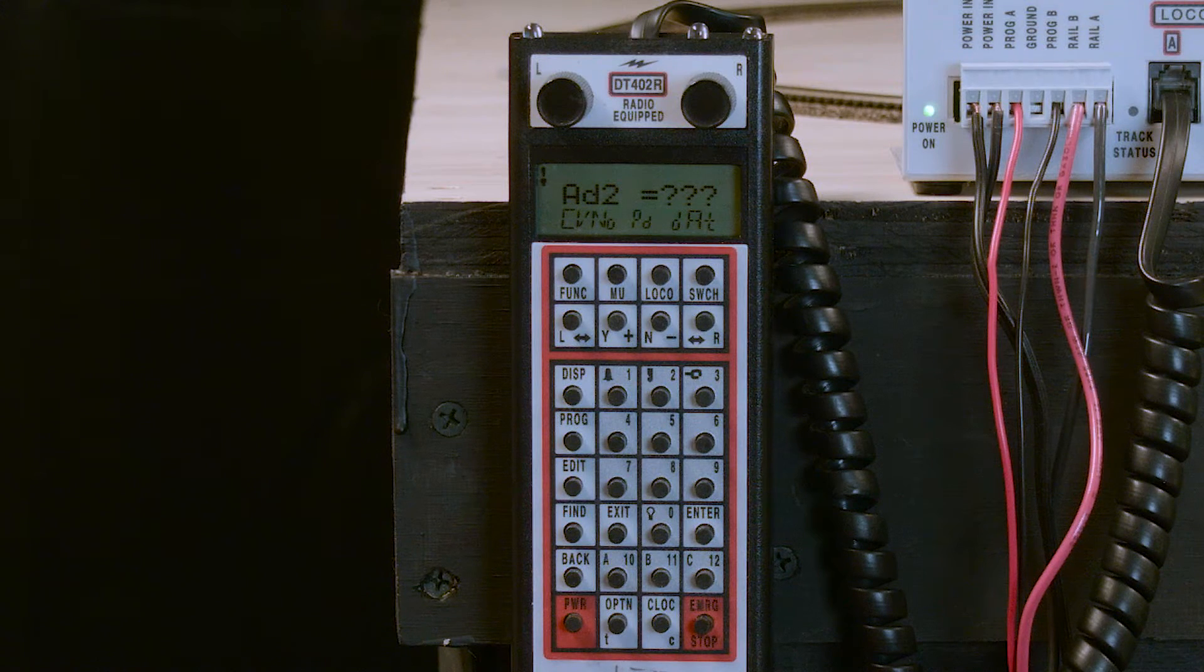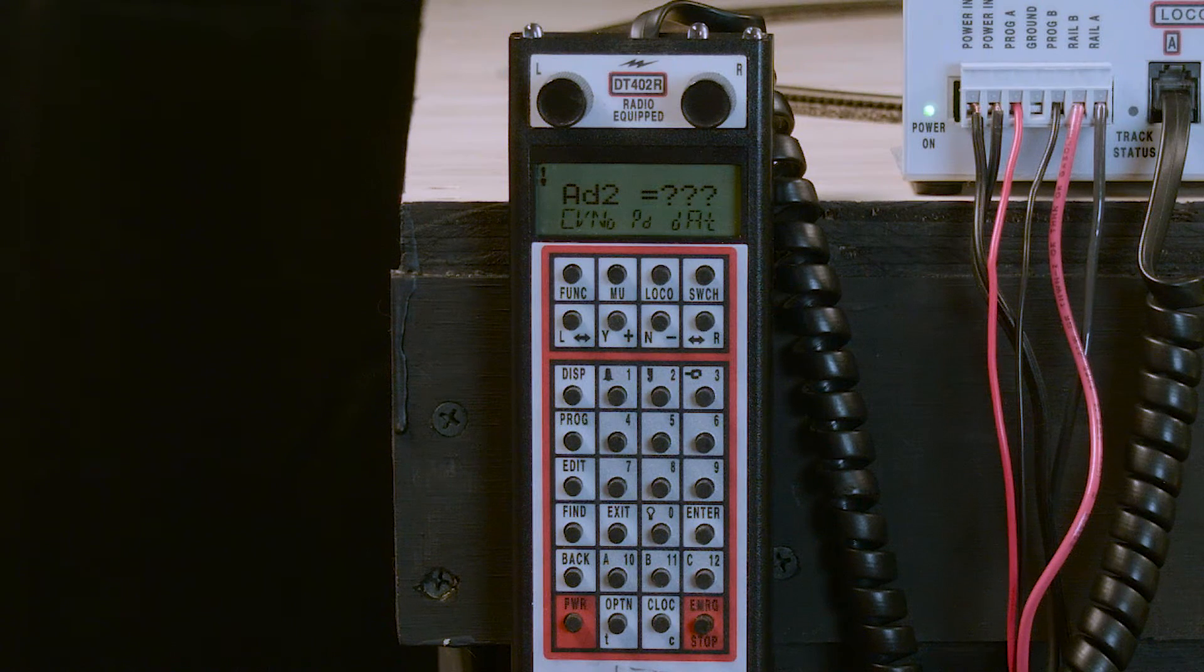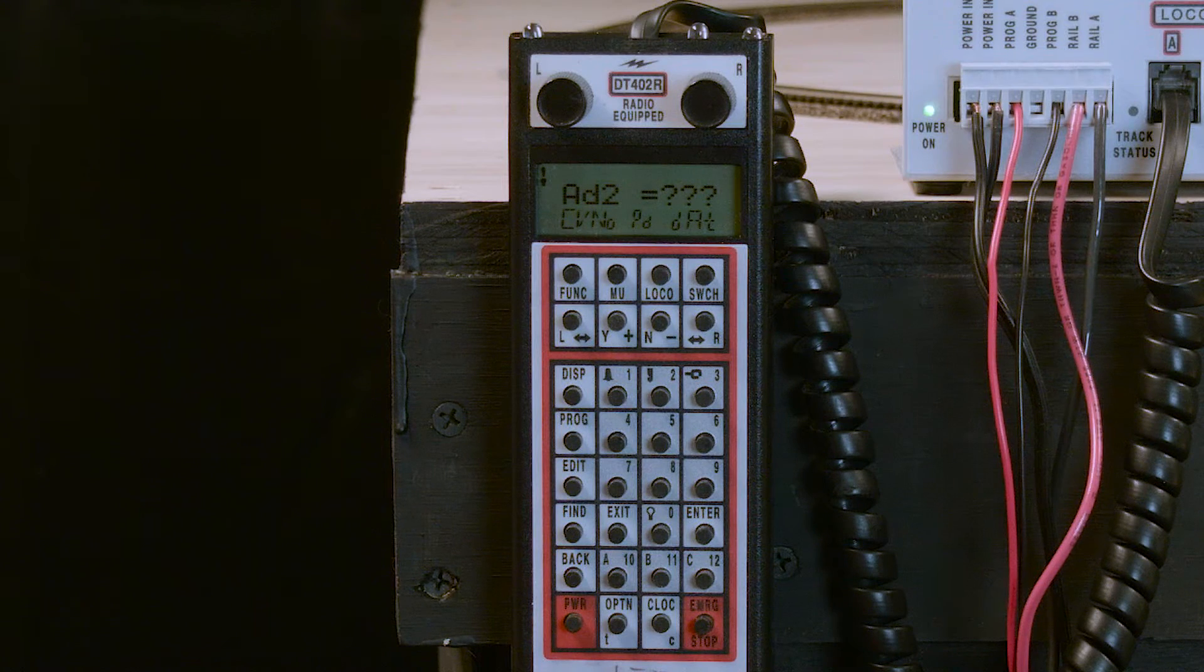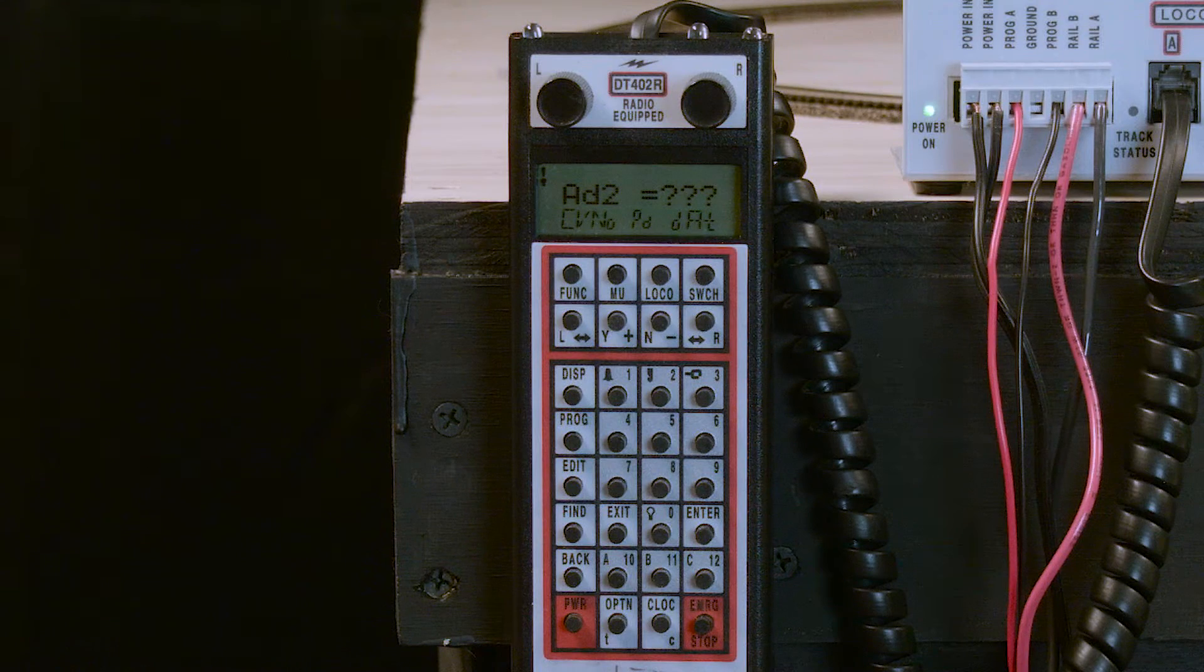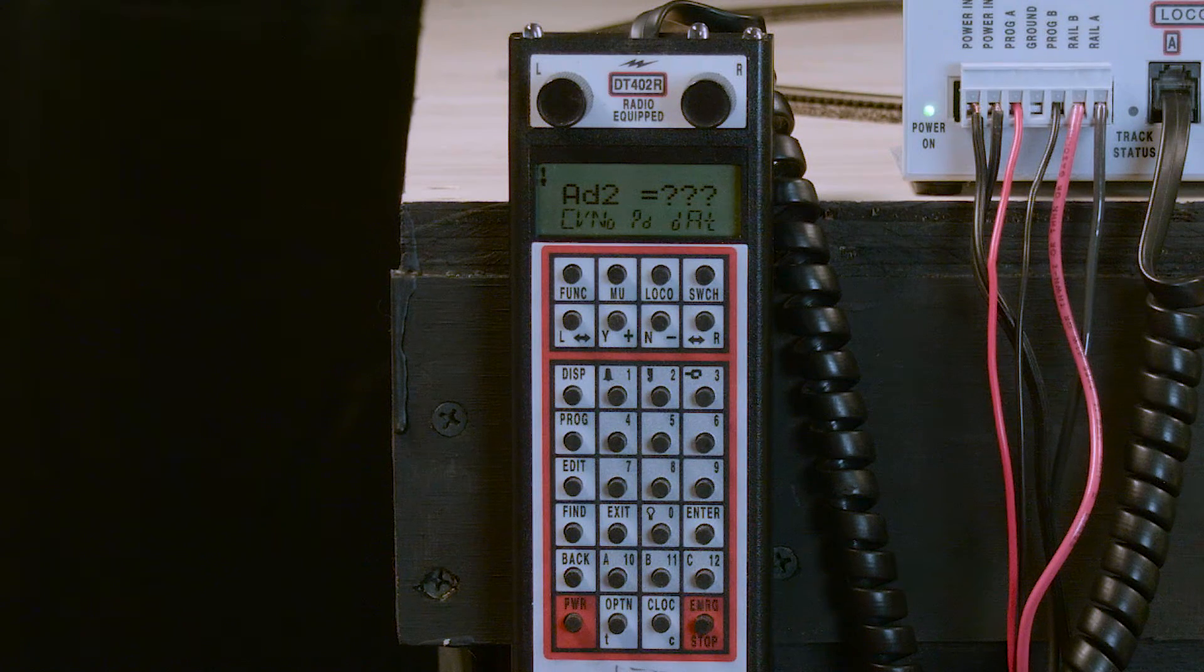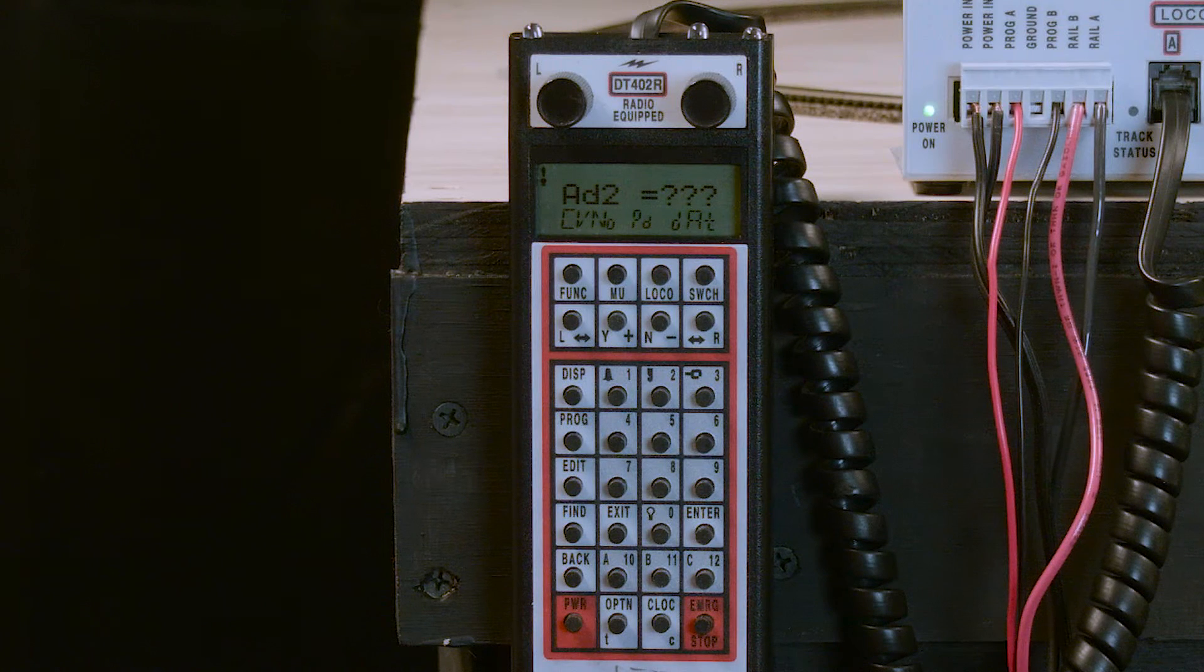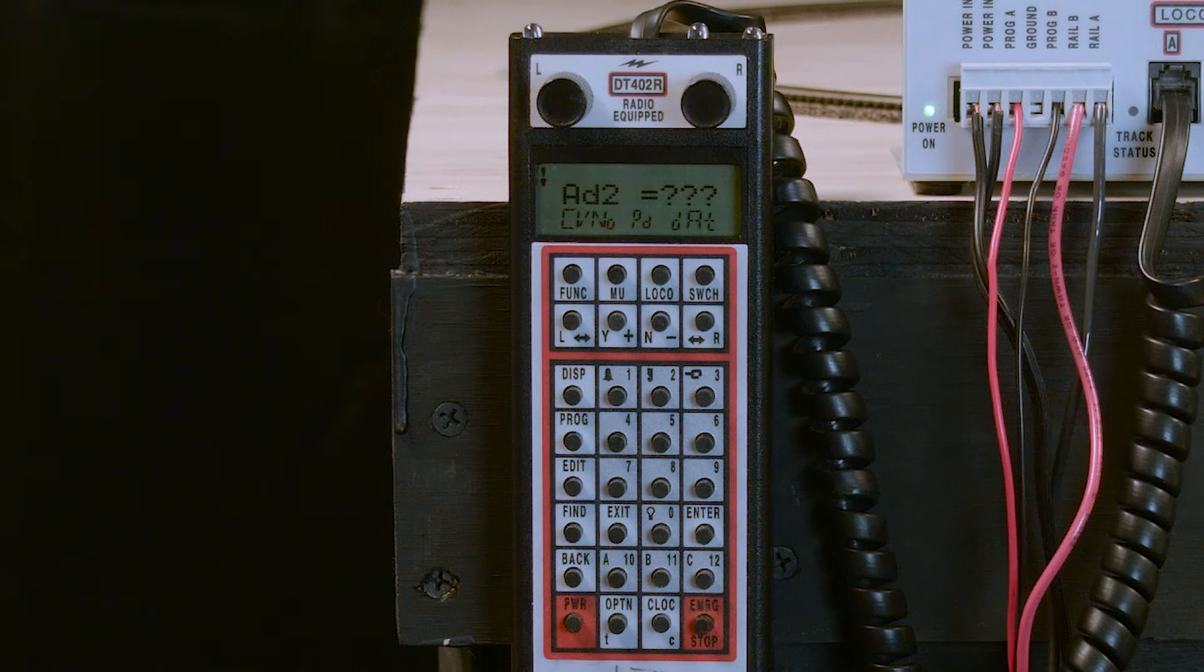And for purposes of programming for this video, we're going to change the locomotive's current address of 03, which is a two-digit DCC address. That's any number between 1 and 127, to a number of 135, which is a four-digit DCC address. And a four-digit address is any number between 128 and 9983.